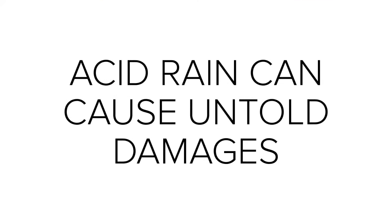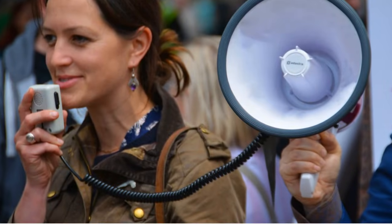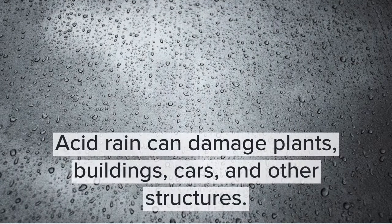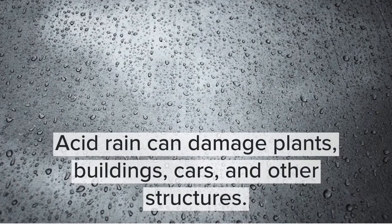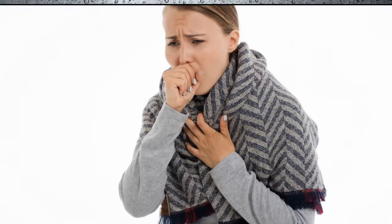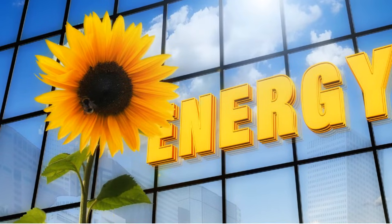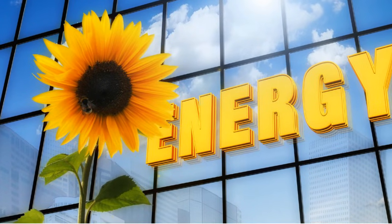Acid rain can cause untold damage and should be given the same attention as other environmental problems. It affects the ecosystem, pollutes water systems, poisons aquatic animals, damages plants, buildings, cars, and other structures, and puts our health at risk by predisposing us to respiratory complications. The best way to prevent acid rain is by curbing the emission of harmful gases, and people should resort to renewable sources of energy that won't pollute the environment.